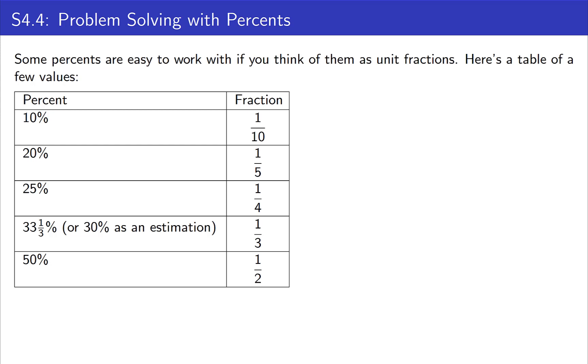So just to go through this list, 10% would be like 1 tenth. 20% would be like 1 fifth. 25% would be like 1 fourth. 1 third is a little bit strange. It's technically 33 and 1 third percent, but if you're saying roughly 30%, that's about 1 third. And 50% would be about 1 half.